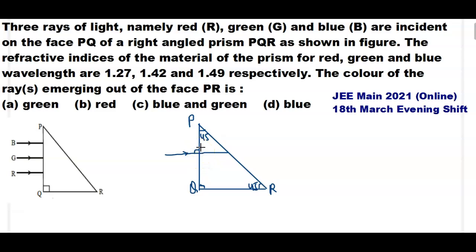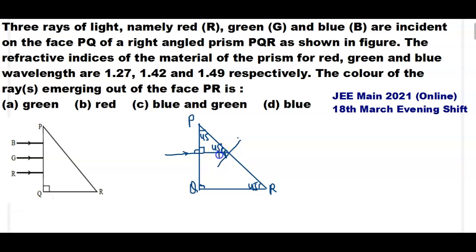Since the ray is normal to surface PQ, the angle there is 90 degrees. Inside the prism, the ray hits face PR at an angle of 45 degrees, so the angle of incidence at face PR is 45 degrees.